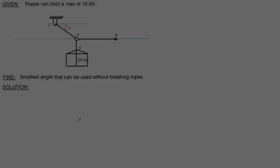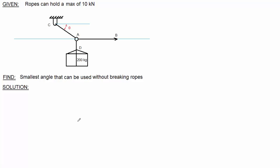Now that you've seen a few examples using static equilibrium principles, let's go over a practical application. In this situation, you have a crate hanging from a couple of ropes from a pivot up here at point C, and there's a force being applied at B. The find statement says to find the smallest angle that can be used without breaking the ropes.